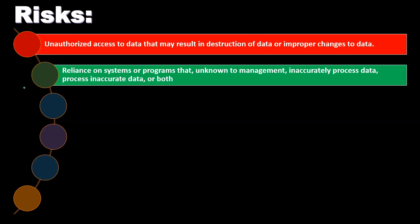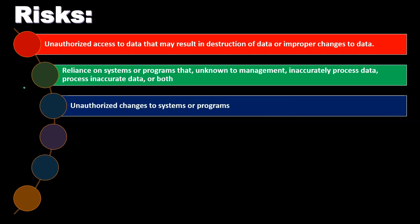Another risk is reliance on systems or programs that, unknown to management, incorrectly process data, process incorrect data, or both. With very complex database systems, management no longer performs the calculations themselves but simply depends on the output number. As a result, the data input going into the system may be off, and we may not be able to interpret the result as well because we're not going through the calculations ourselves. The ability to interpret complex calculations and provide proper input can deteriorate as we become more dependent on the computer.